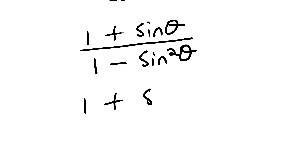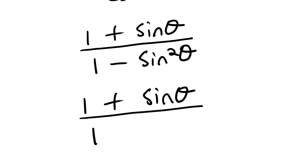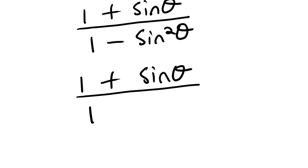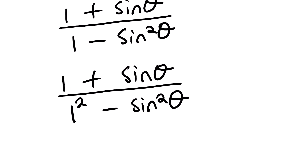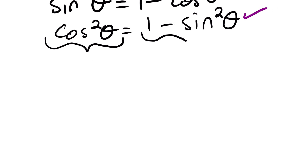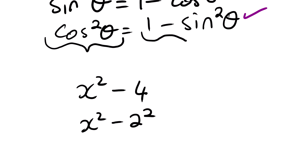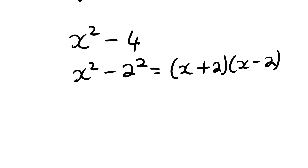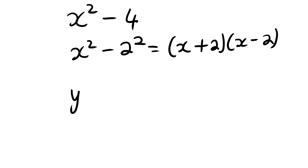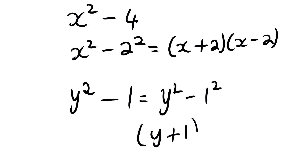From here we have 1 plus sin theta all over 1 minus sin squared theta, which we can express as 1 squared minus sin squared theta. This is a difference of two squares. From algebra: x squared minus 4 is the same as x squared minus 2 squared, which factorizes as (x + 2)(x − 2). Similarly, 1 minus sin squared theta factorizes as (1 − sin theta)(1 + sin theta).